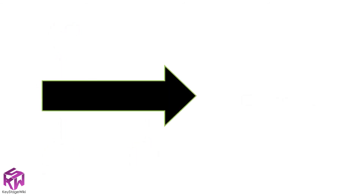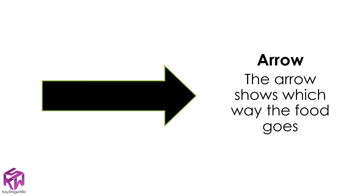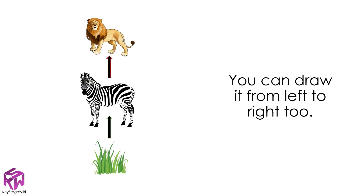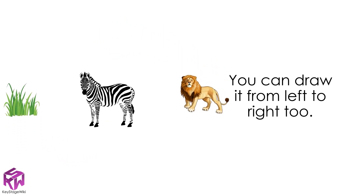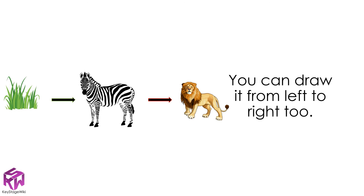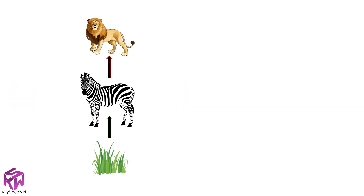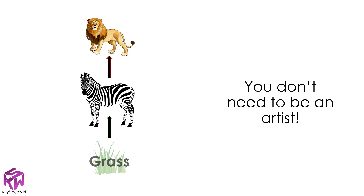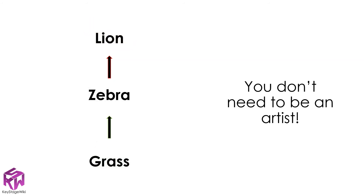One of the most important things to get right in a food chain is the arrow we draw. The arrow shows us the direction of the food going into the animal that eats that food. When drawing your food chain, it doesn't need to be written from bottom to top — you can also draw it from left to right. The only important direction is the arrows going from the food to the animal that eats that food. You also don't need to be an artist — it's enough just to write the names of the living things with the arrows in the correct direction.